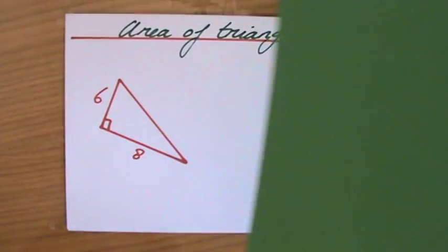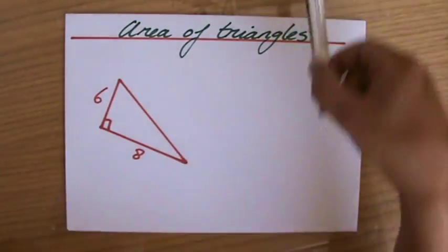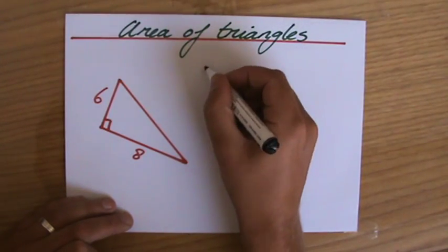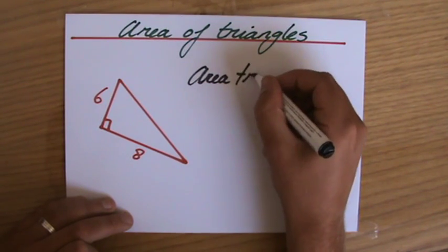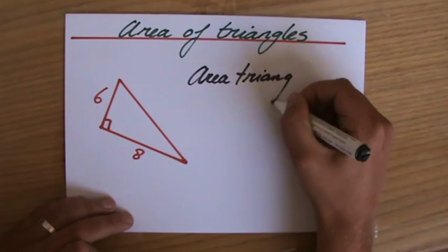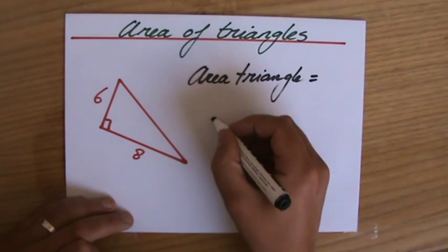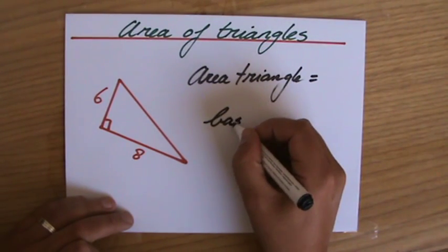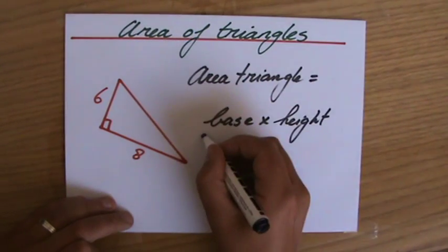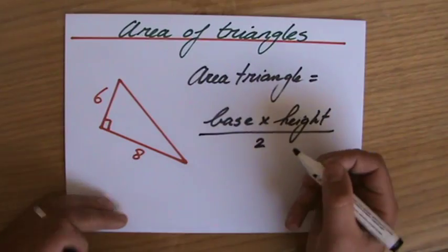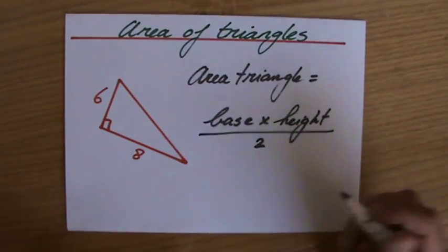Now back to the question then. The area of a triangle equals base times the height. Well, that is a rectangle, so I've got to divide it by two to have the area for a triangle. Or you can see in your book that is the same as half times the base times the height.